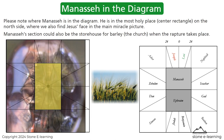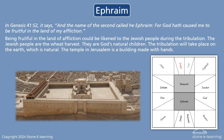Please note where Manasseh is in the diagram — he is in the most holy place, the center rectangle, on the north side, where we also find Jesus' face in the main miracle picture. Manasseh's section could also be the storehouse for barley, the church, when the rapture takes place. In Genesis 41:52 it says, 'And the name of the second called he Ephraim, for God hath caused me to be fruitful in the land of my affliction.' Being fruitful in the land of affliction could be likened to the Jewish people during the tribulation. The Jewish people are the wheat harvest — they are God's natural children. The tribulation will take place on the earth, which is natural.